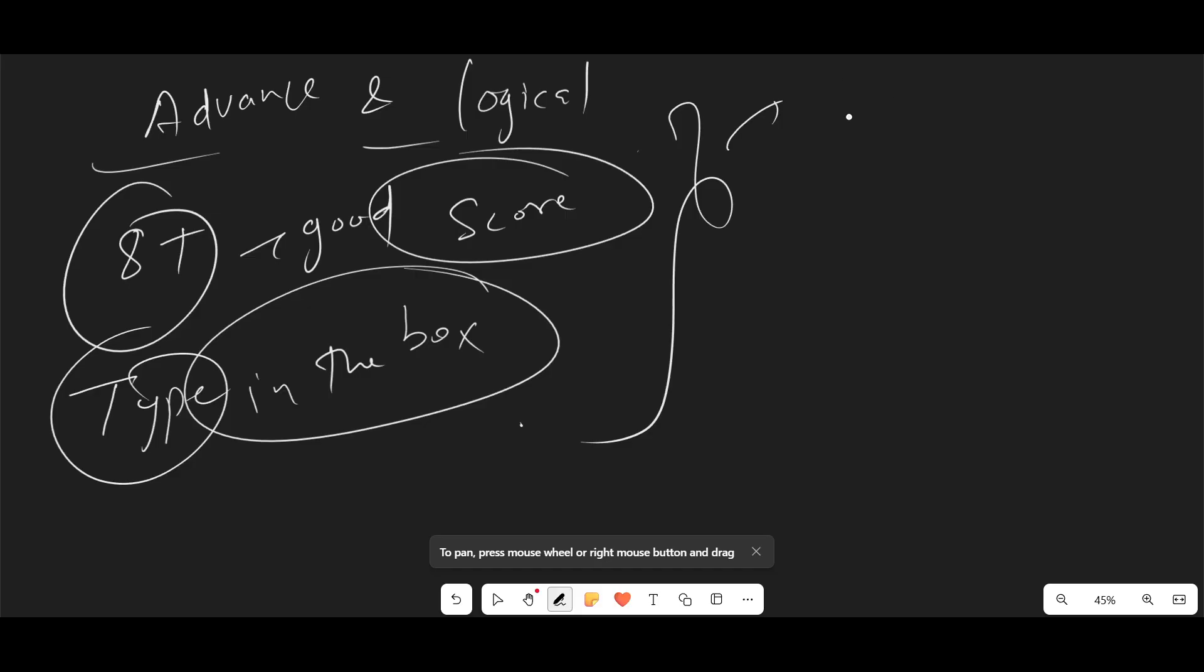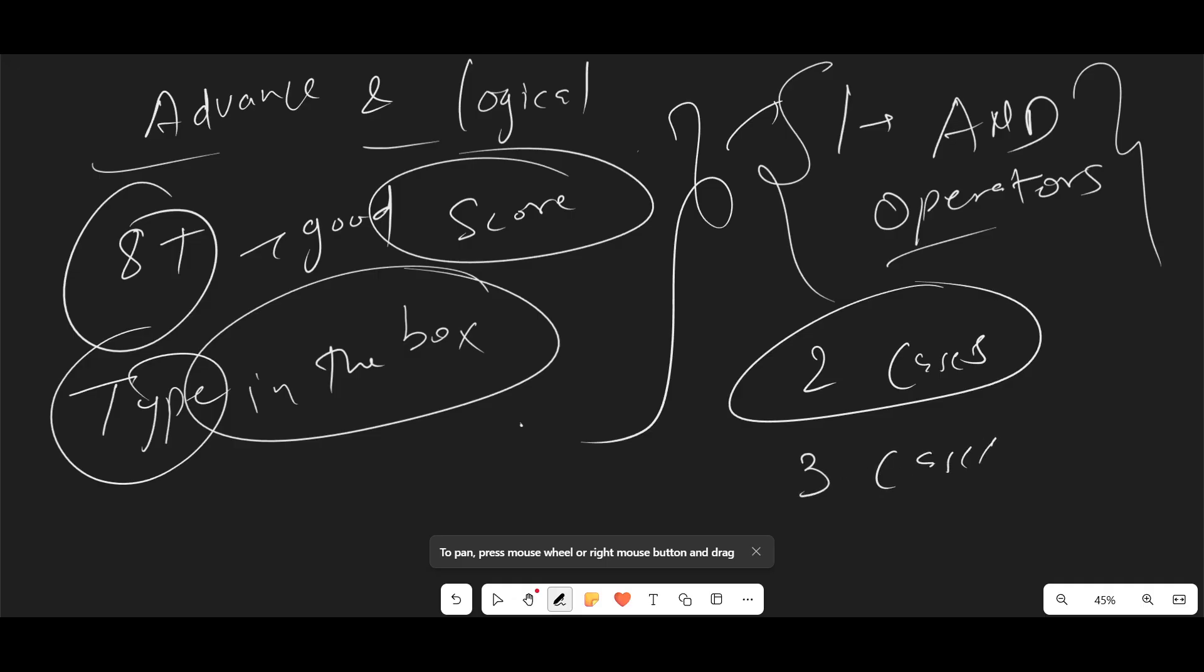And talking about the coding question, the first one, which was and operator based, it was a little bit confusing question and a hard question. The response which I got from the many candidates, many candidates only passed like two cases. Only one response I got from the student, he said, like I passed three cases. So from the most of the candidates, I got the response as they passed the two cases or one candidate said the three cases.